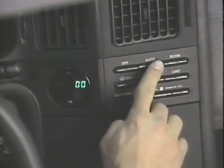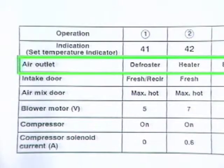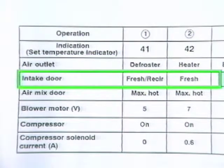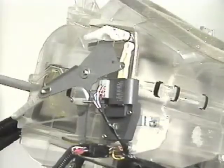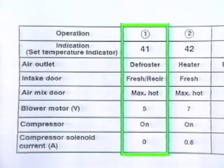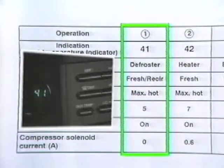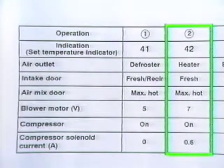Following the fault code display mode, the output signal recognition mode is accessed by depressing the auto switch one time. The defrost LED and mode 41 are displayed. The ACU program has six predetermined output signals which are sent to the HVAC system controls during this mode. The control HVAC components should respond as shown in the service manual. To advance through the five output signal recognition modes, depress the defrost switch. To return to the fault code display mode, press the auto switch one time.